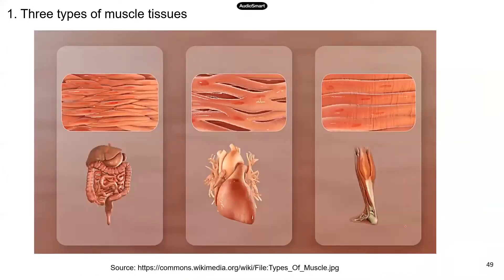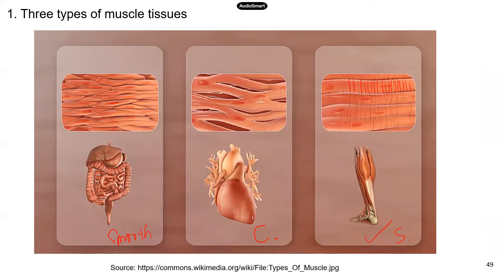If you don't know what striations look like, here's a comparison: skeletal muscle, cardiac muscle, and smooth muscle. You can see lines in skeletal muscles — those lines reflect the dark pattern, and between them is the light pattern. That alternating light and dark pattern is what causes striation. In cardiac muscle you can also see some lines — those are the striations. In smooth muscle, you don't really see any lines. That's the comparison between the three types of muscle tissues.